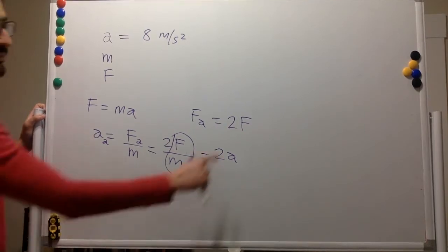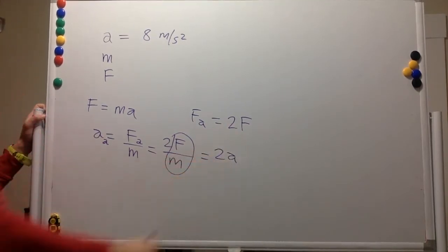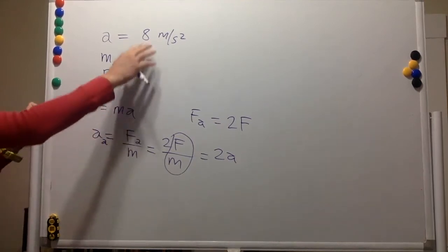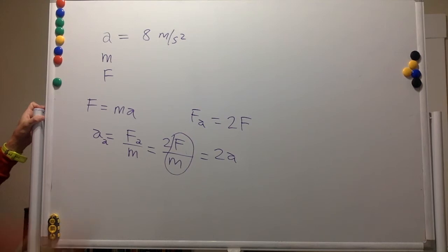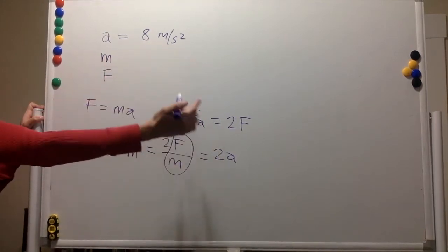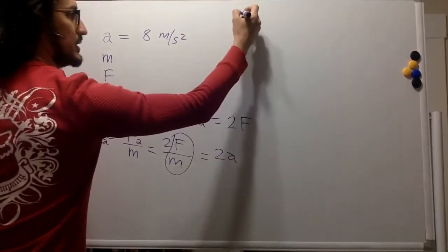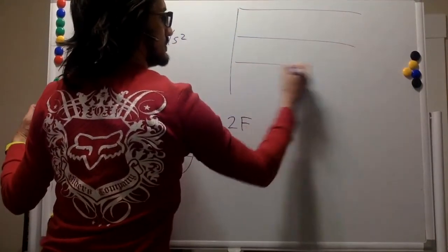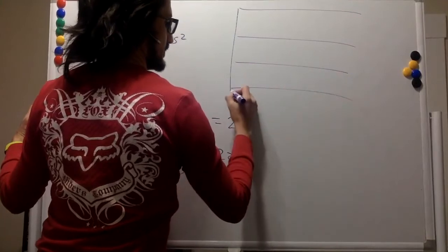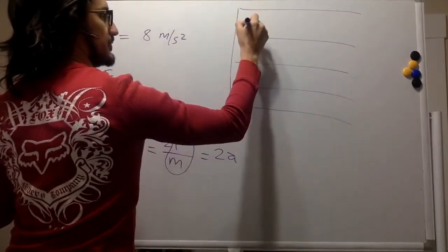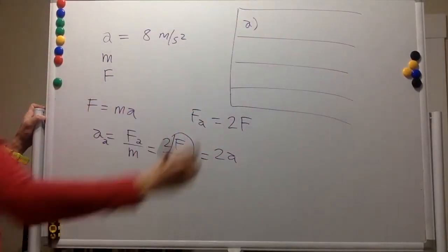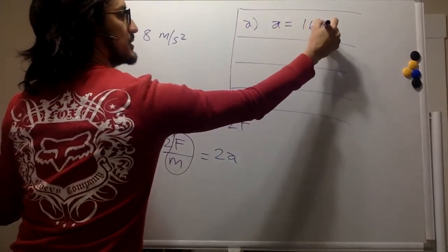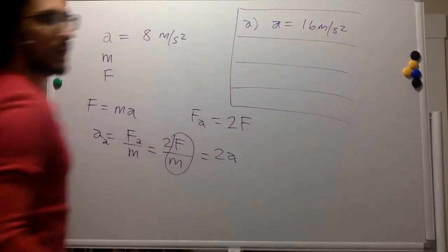So if you double the force, you double the acceleration — not surprisingly. If the acceleration was 8 meters per second squared, it's now going to be 16 meters per second squared. Part A acceleration is 16 meters per second squared.